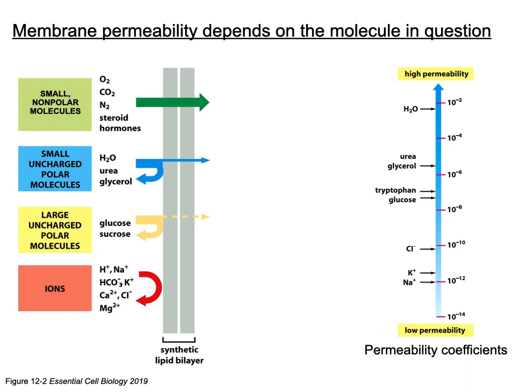This figure looks at different molecules and ions and their ability to diffuse across the membrane. Membranes are selectively permeable. Small polar molecules and hydrophobic molecules — like oxygen, carbon dioxide, nitrogen, and some steroid hormones — can move across the membrane relatively easily and are considered highly permeable.